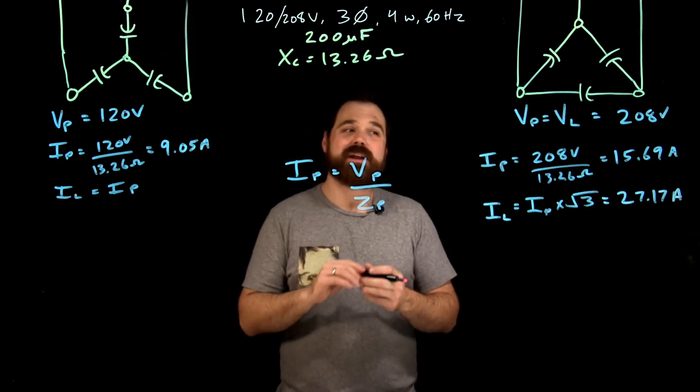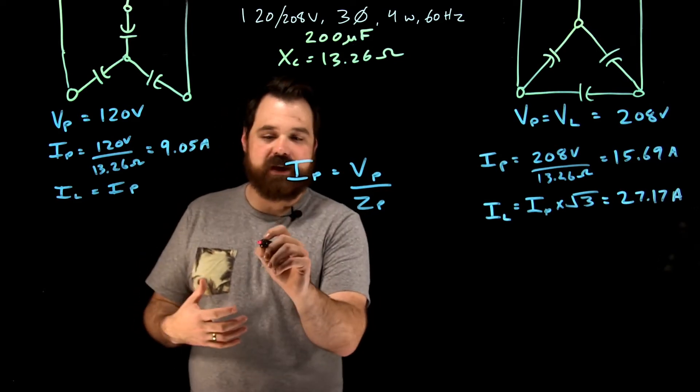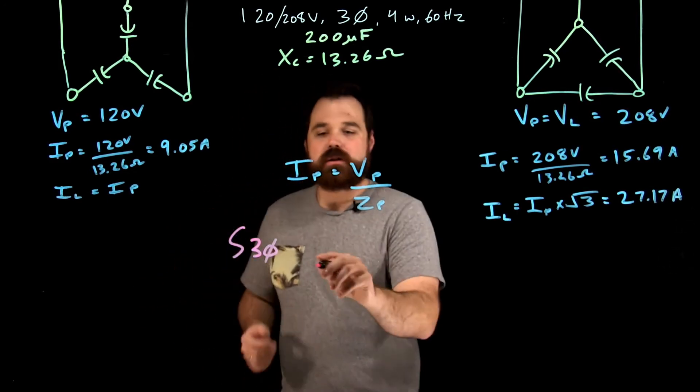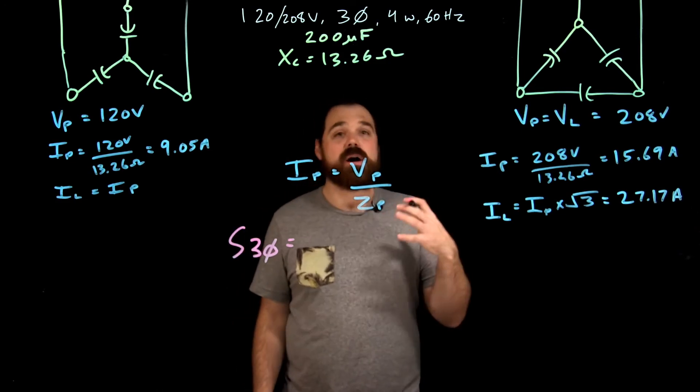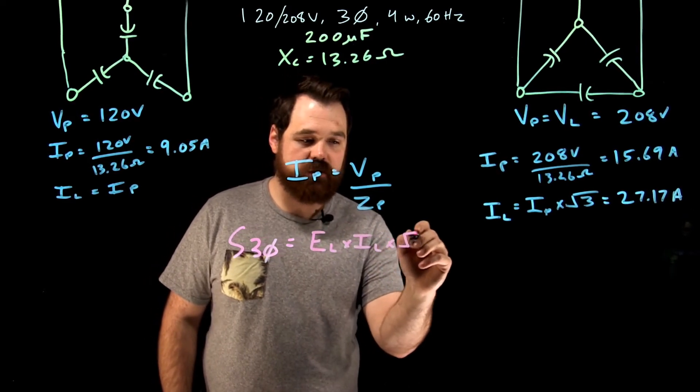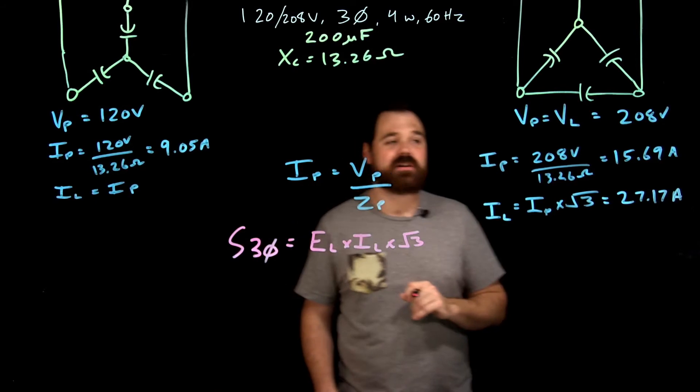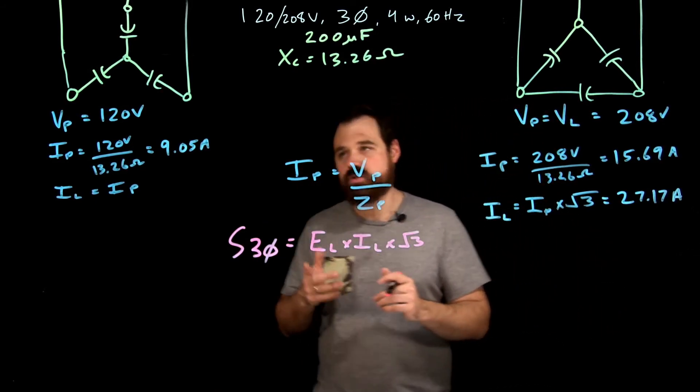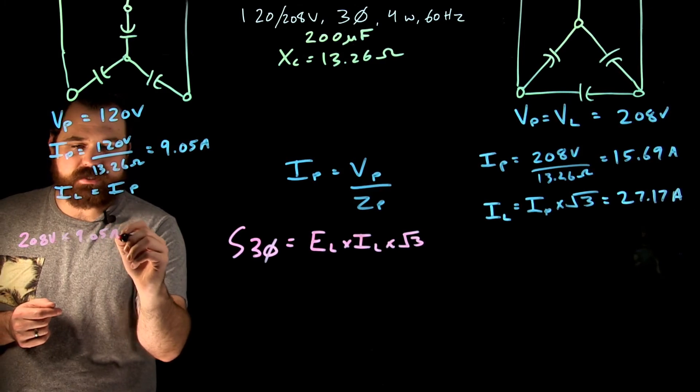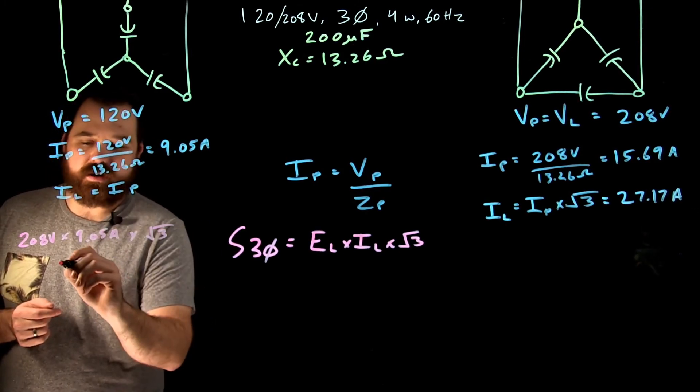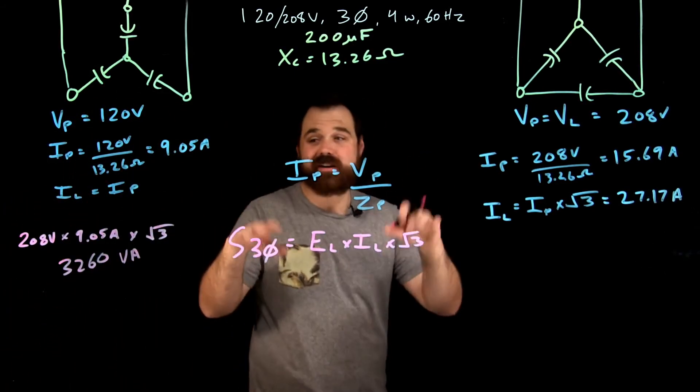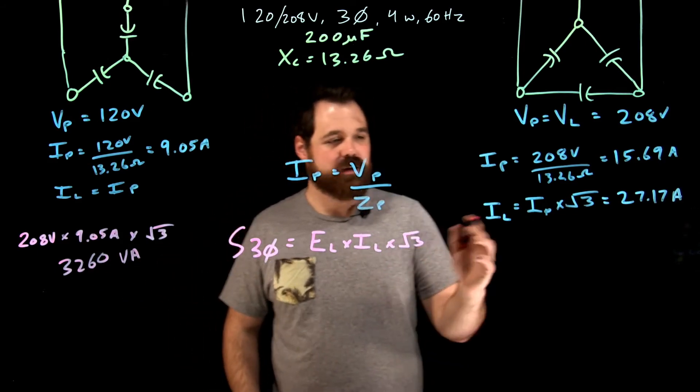The last thing I want to talk about before we kind of end here today is the power. So the three phase power that we're going to get out of these capacitors. So our balanced formula for S three phase is E line times I line times the square root of three. So we're going to run that calculation on both of these and we'll see where that goes. So over here, we would go 208 volts times 9.05 amps times the square root of three, and we get around 3260 VA. And again, because I rounded my current so much here, it might not be exactly that, but it's close enough.